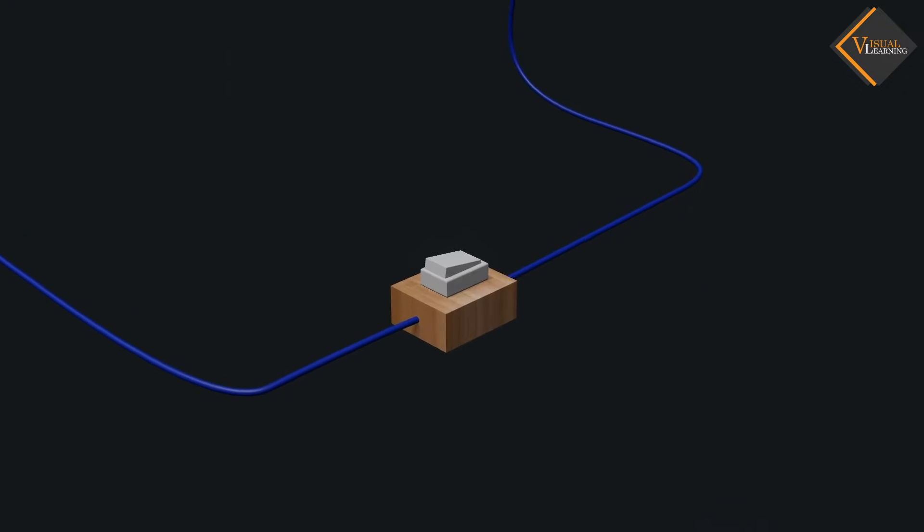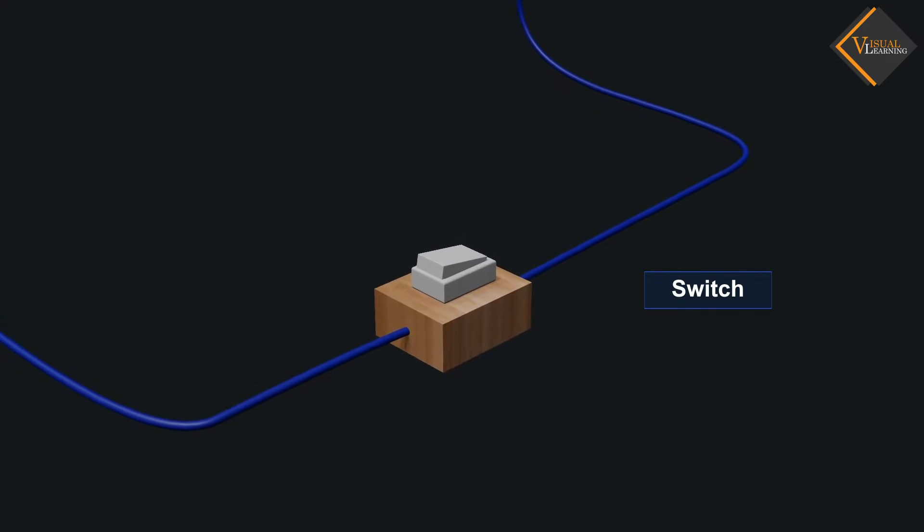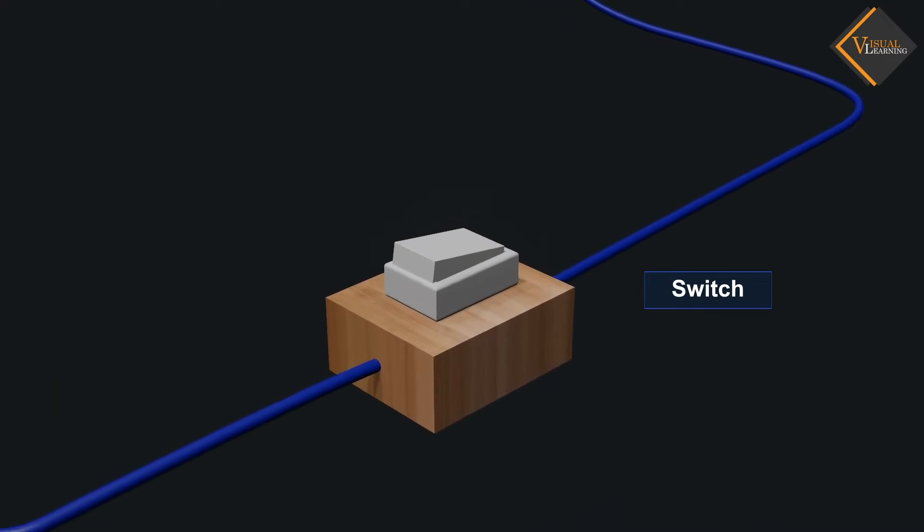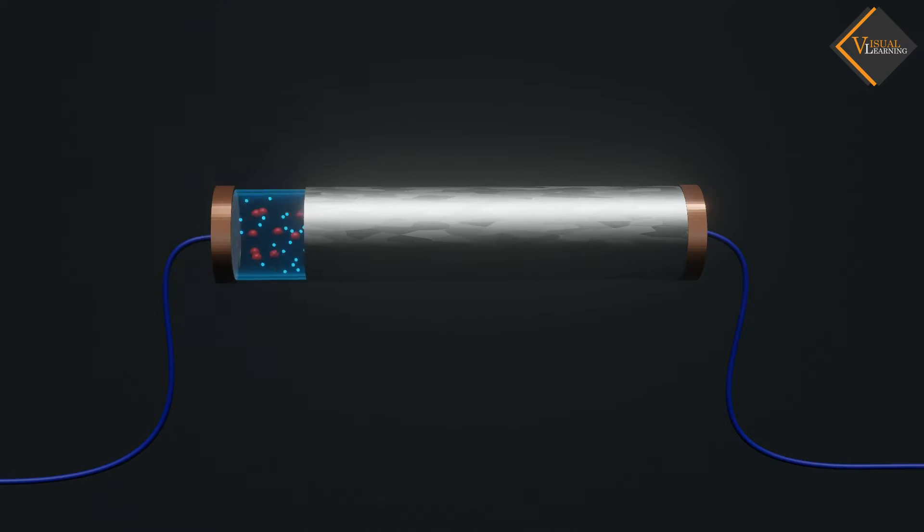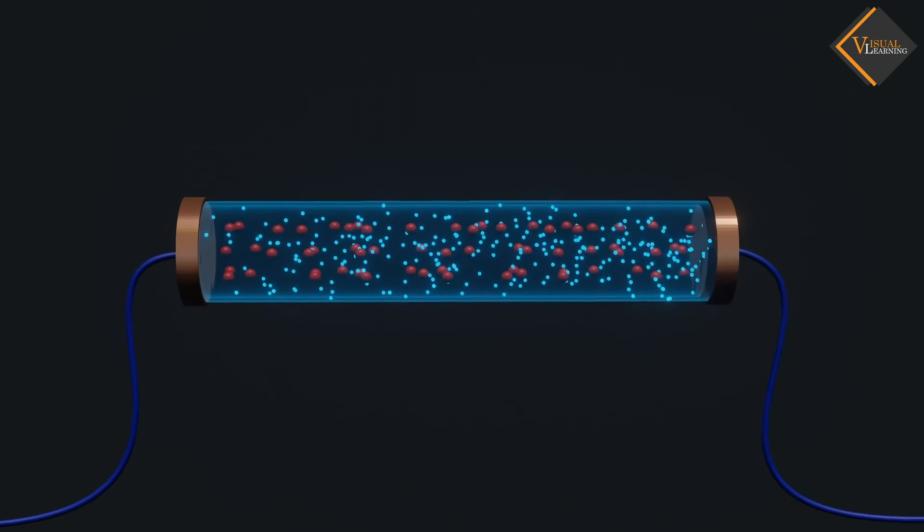We also provide a switch either side of the conductor to turn on or turn off the circuit. When we turn on the switch, the electrons start to move.